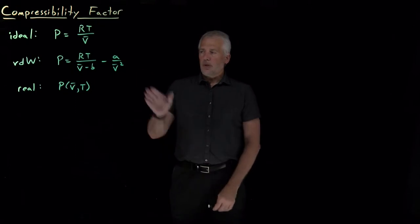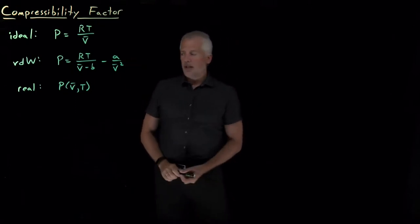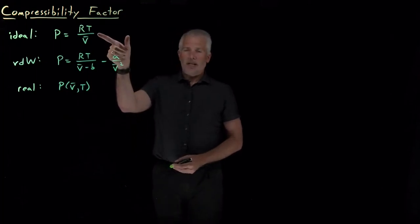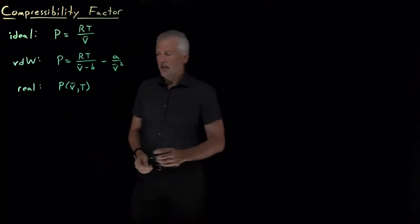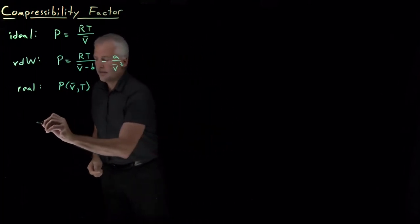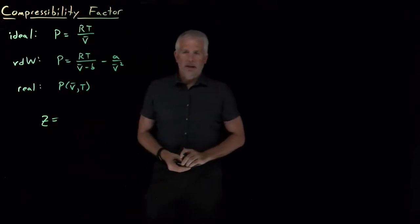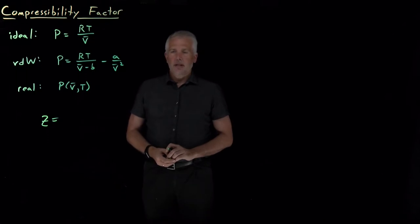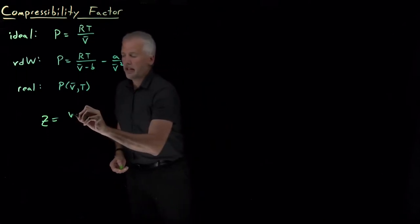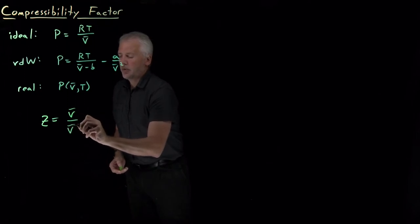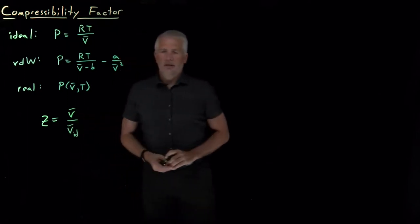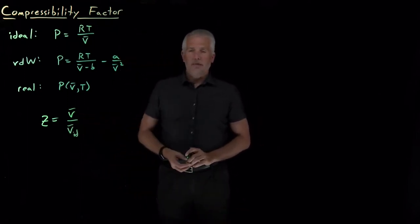But regardless of whether we're using a Van der Waals model or a more complicated equation of state, we're often interested in how ideal the model or the gas itself actually is. We can define a quantity as the actual volume of the gas divided by the volume it would have if it were an ideal gas.